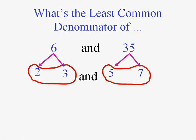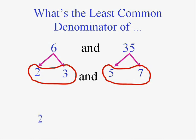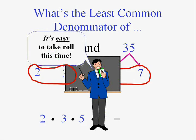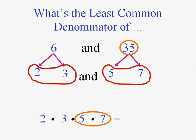Now I've got them broken up. Let's do some construction — we're going to construct the least common multiple or least common denominator. I need a 2, I need a 3, I need a 5, and I need a 7. I need one of everything — it's kind of the union of the two sets. And then I multiply what I have. 6 is there because there's a 2 and a 3. 35 is there because there's a 5 and a 7. So the least common multiple is 2 × 3 × 5 × 7 = 210.